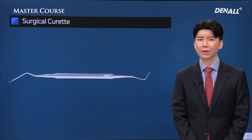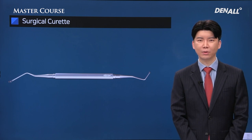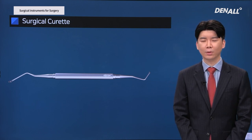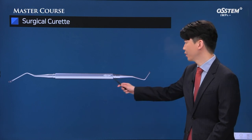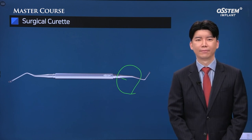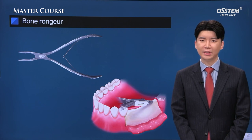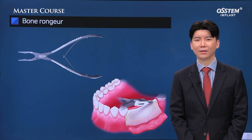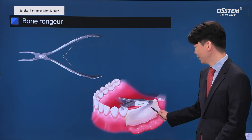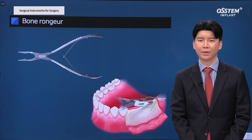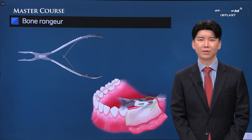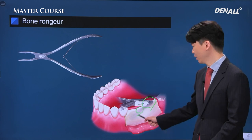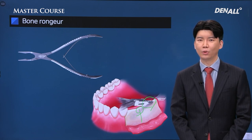When you make an incision on an extraction site and reflect the flap, you may encounter an irregular bone surface and granulation tissue. It is important to remove the granulation tissue and make the surface even using a surgical curette. In many cases requiring implant surgery, extraction is needed due to unfavorable periodontal conditions, so the surface may be irregular. We need to trim the irregular surface using a bone ronger, which helps determine implant placement position and prevents interference with implant drilling.